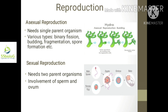Filamentous algae can also multiply by the fragmentation process. In the case of unicellular organisms, they mostly reproduce by amitotic cell division, that is binary fission. For them, reproduction and growth are mostly similar.